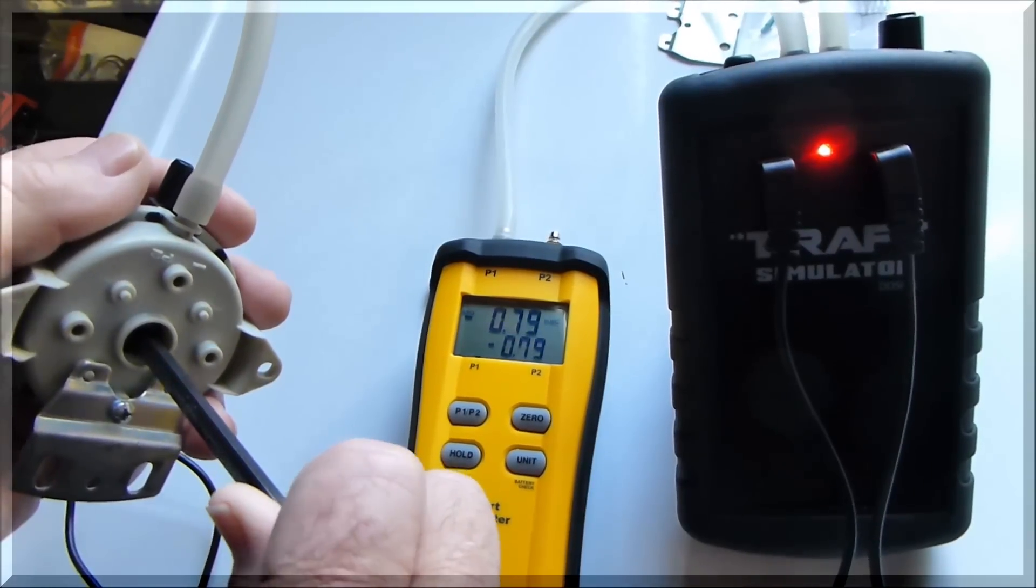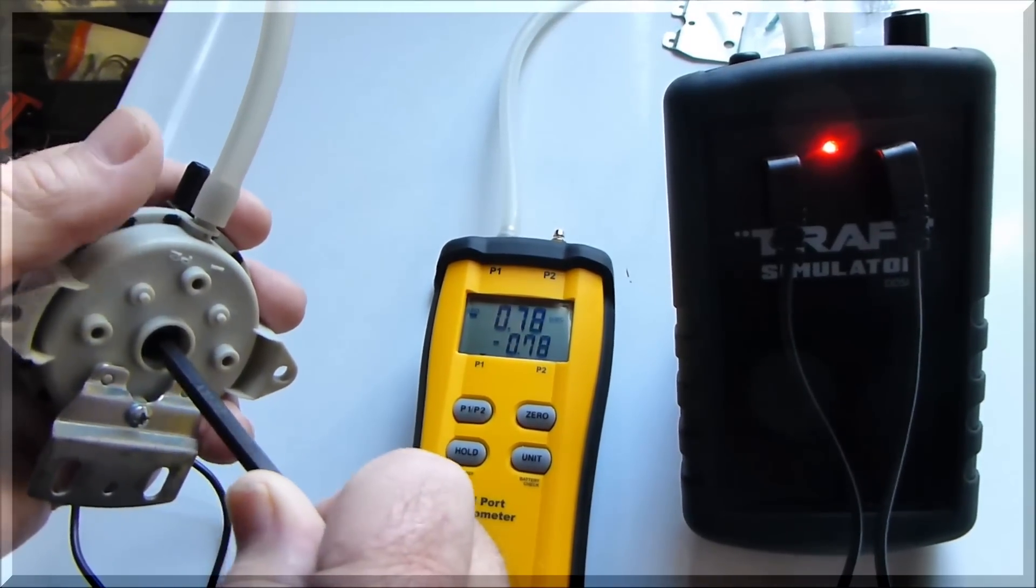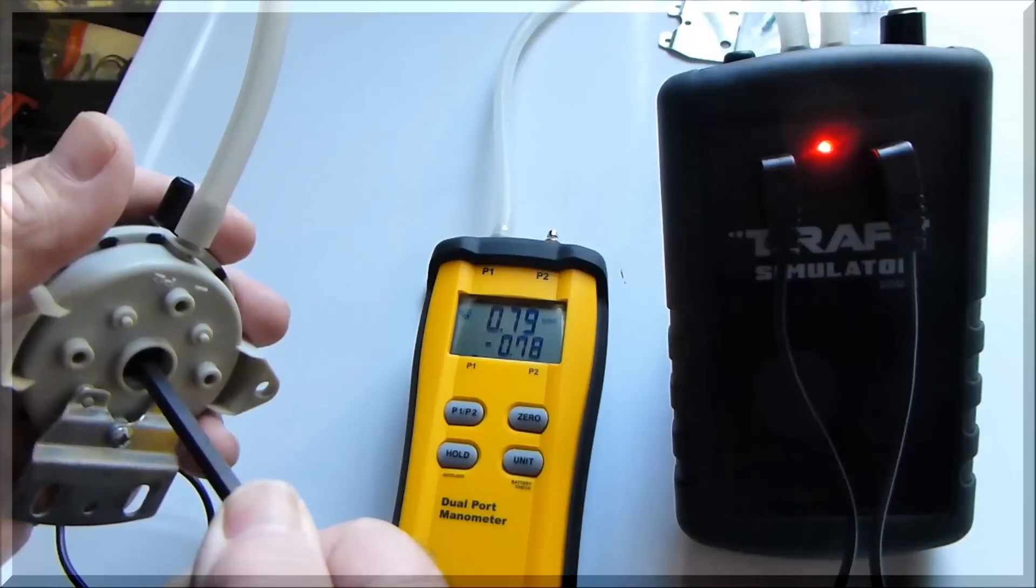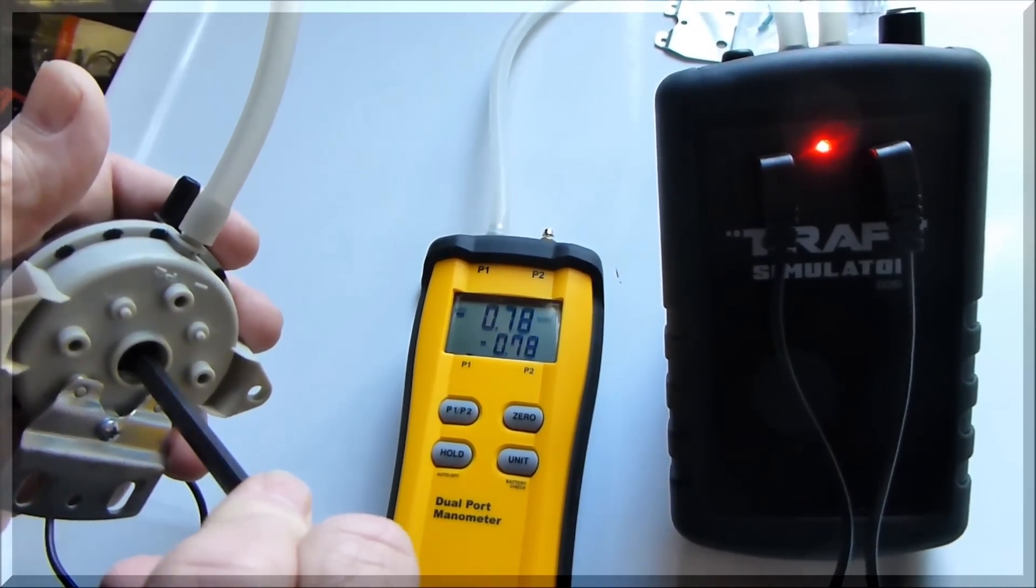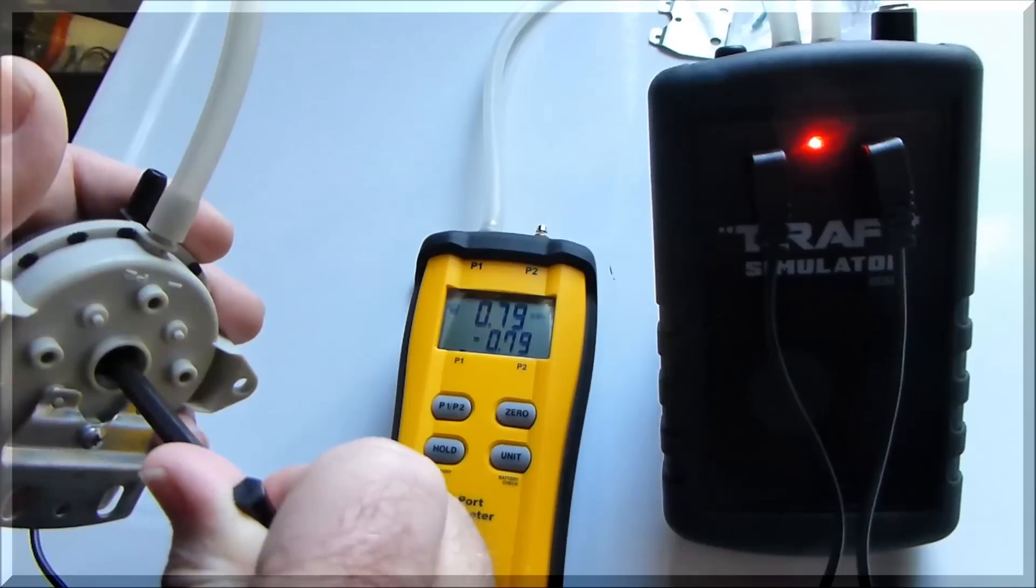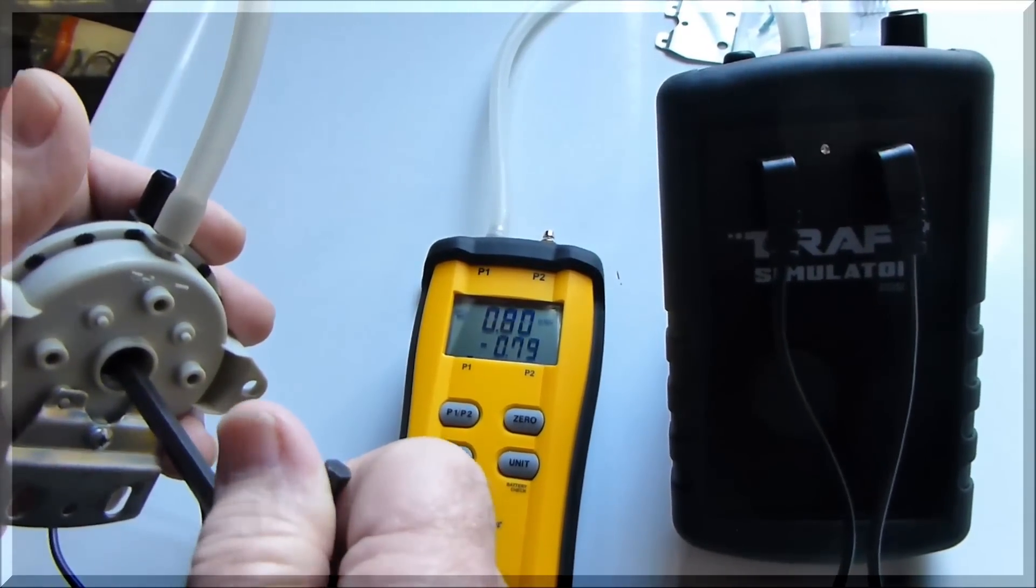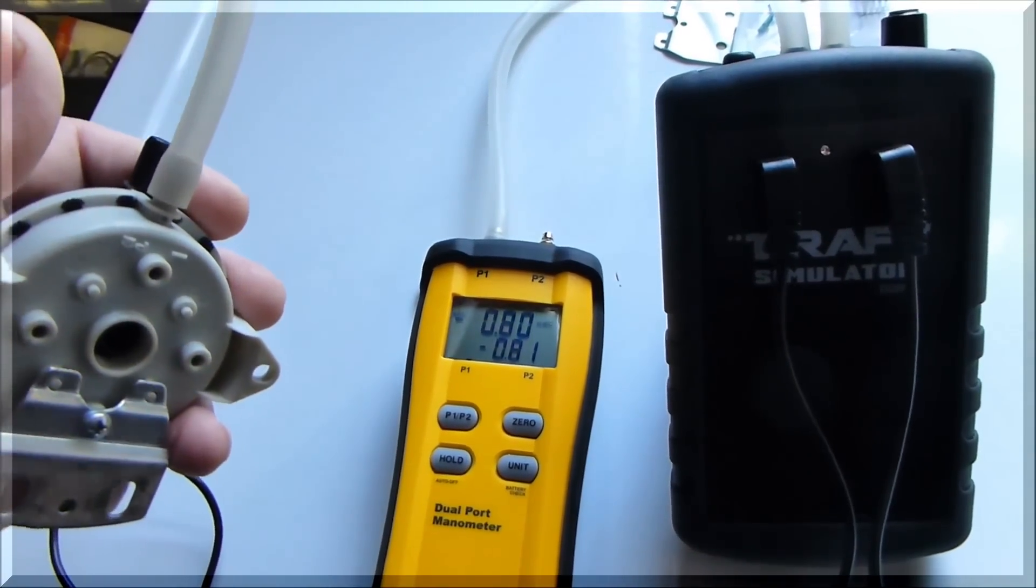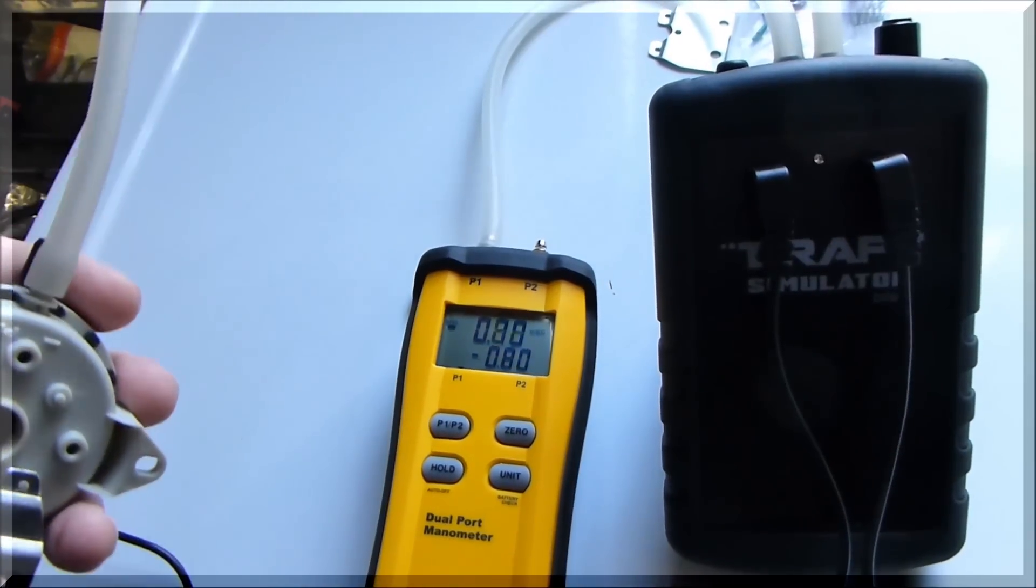We're going to adjust the adjustment screw until the LED on the DDSM1 turns off. And there we have it. We have a .80 inches of water column pressure switch.